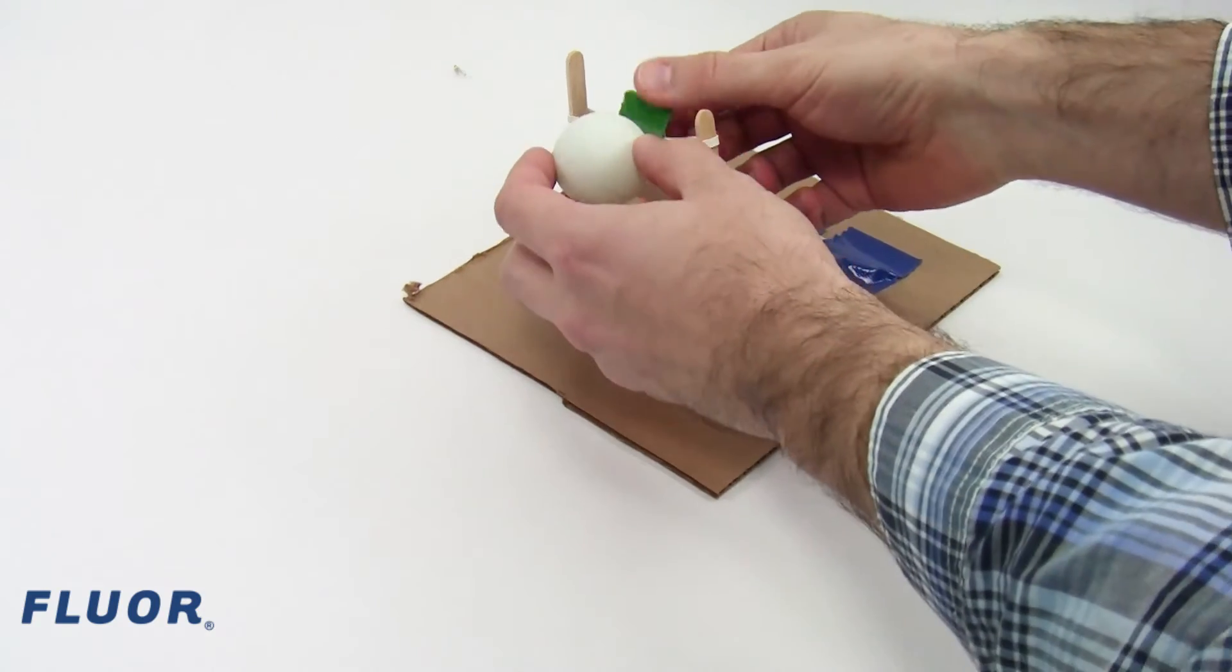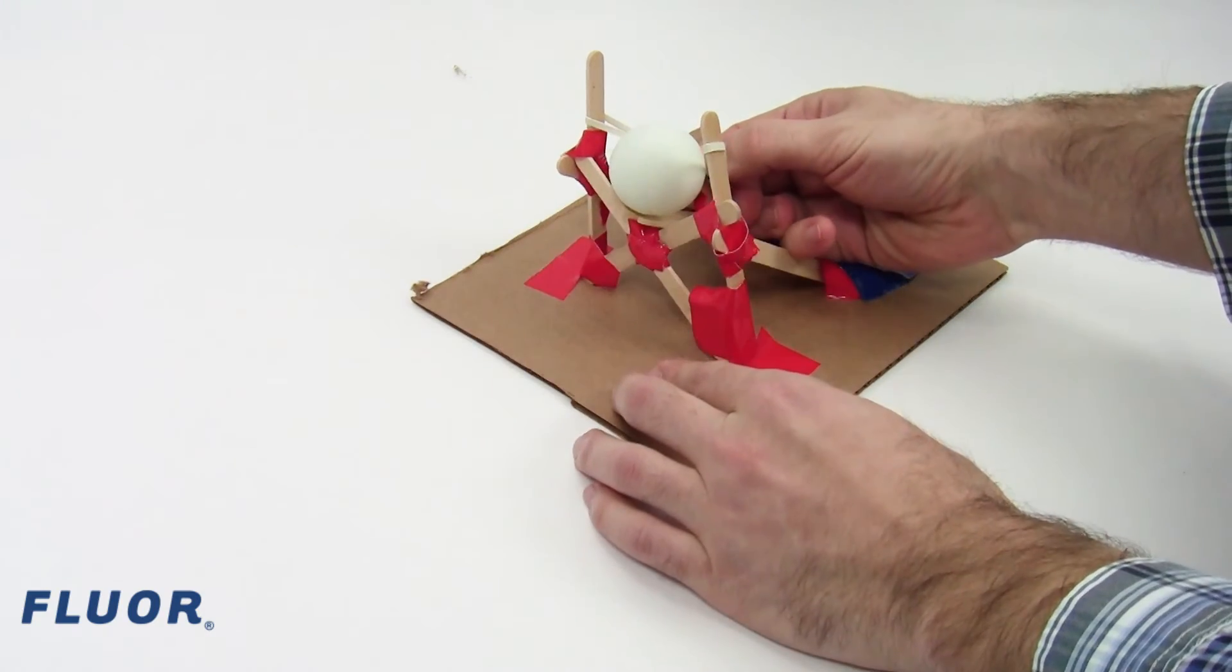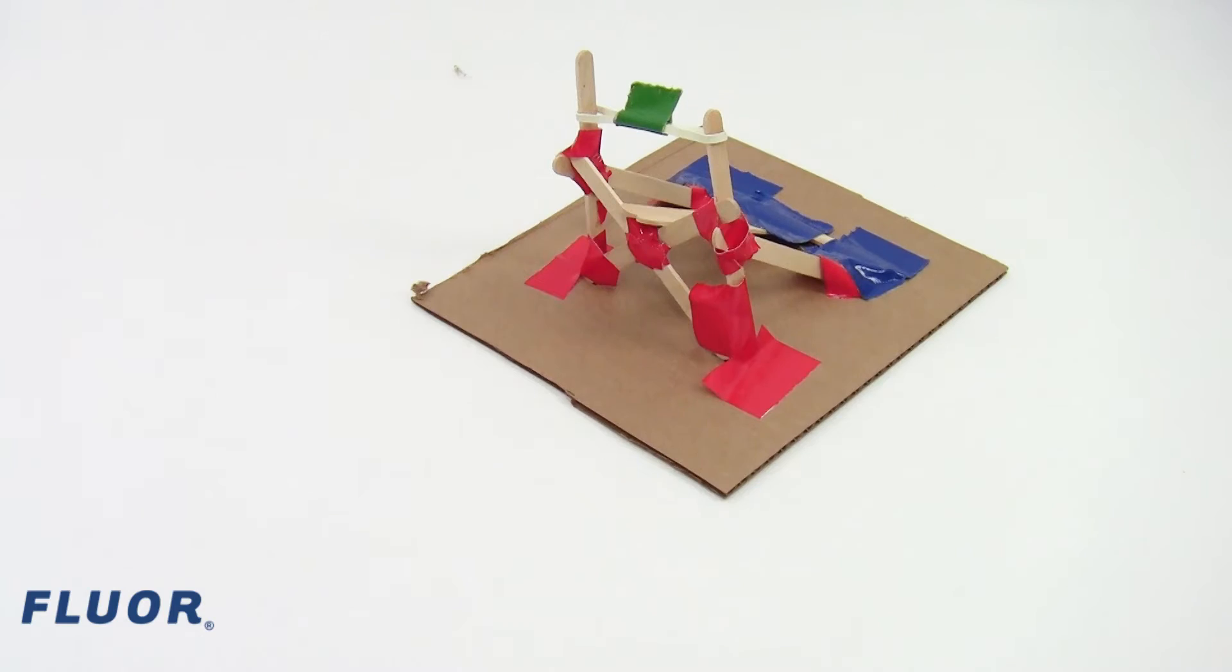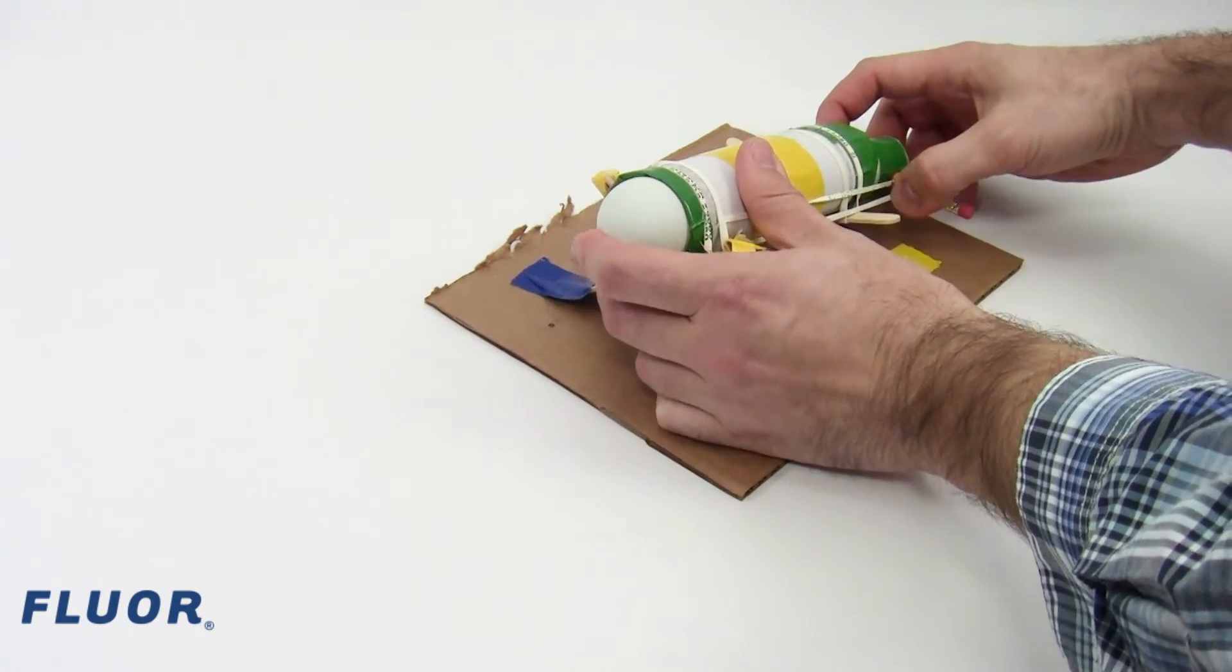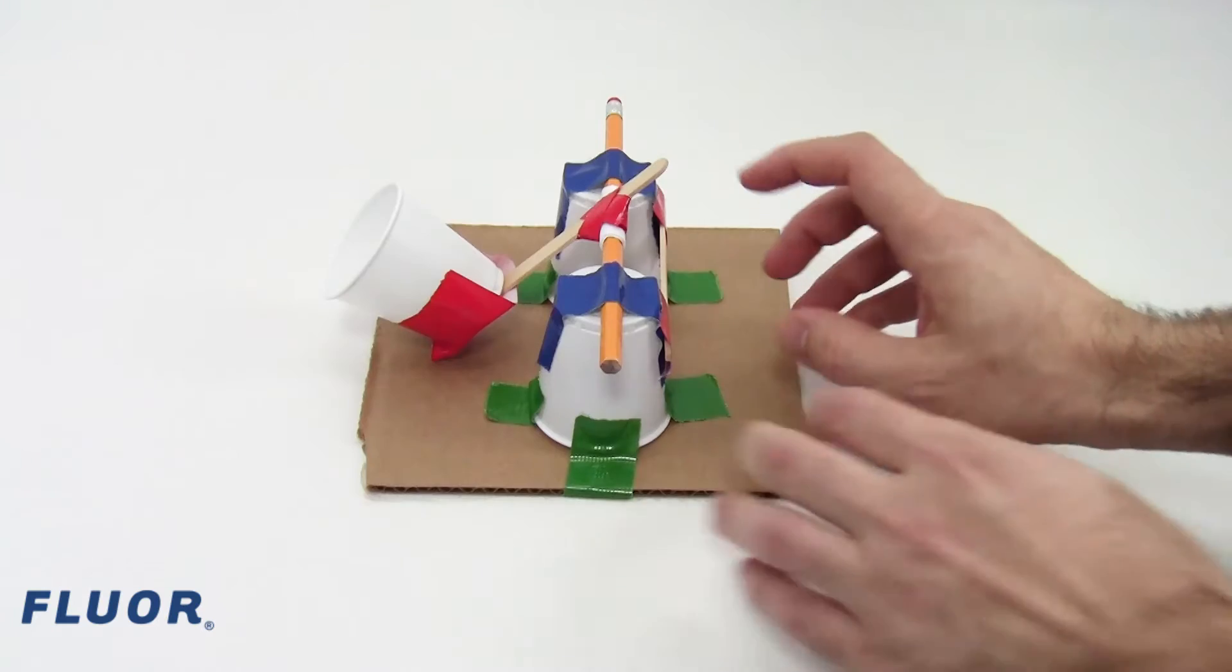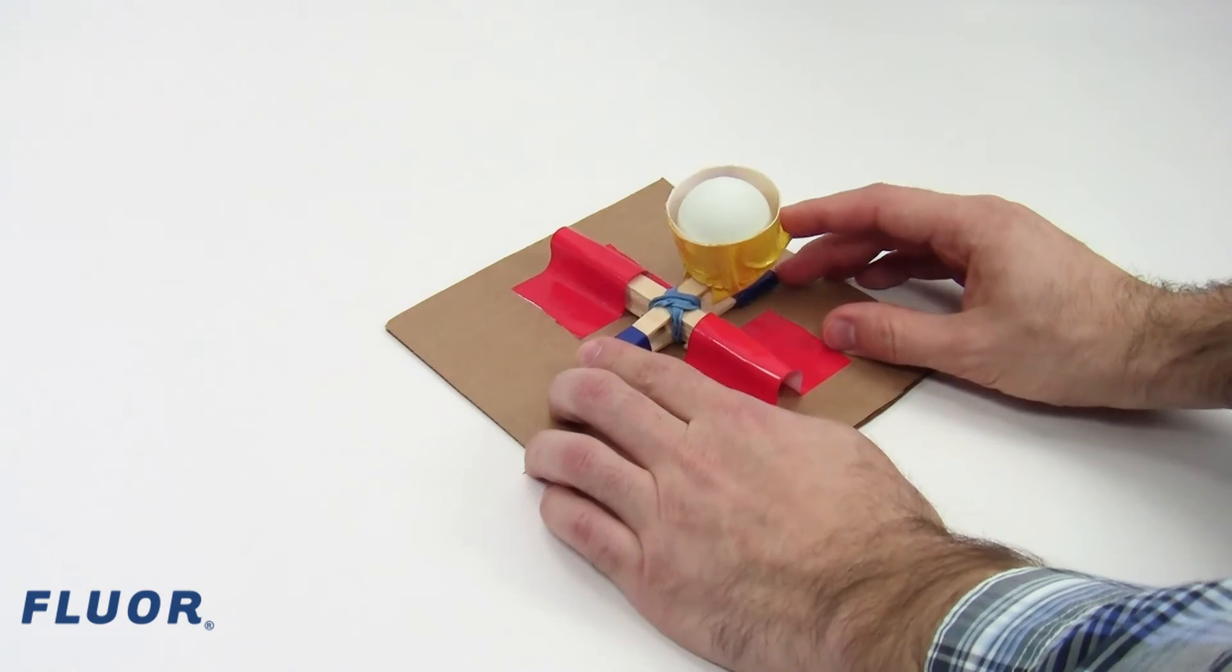There are many different ways you can use these materials to build a device to launch the ping pong ball. For example, you can build a slingshot style device that uses energy stored in a stretched rubber band to launch the ball. There are also multiple ways to build a catapult style device.